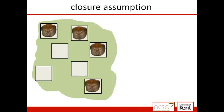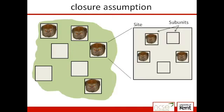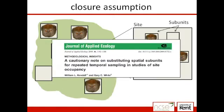In spatial replication, the assumption is broken when the species is present at a fraction of subunits — that is, the species occupies sites only partially. In their 2009 paper, Kendall and White looked at this case to identify the best sampling scheme in order not to have a biased estimator of occupancy in this situation.